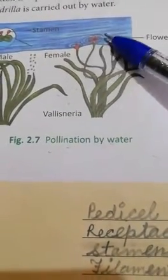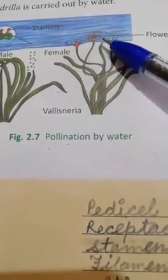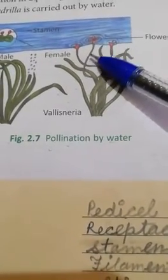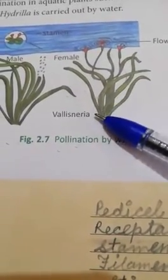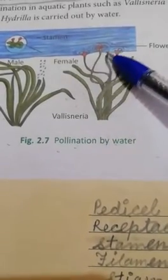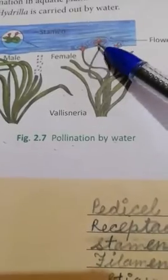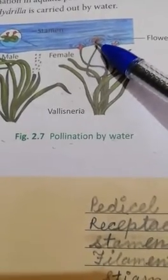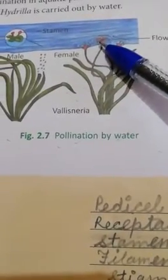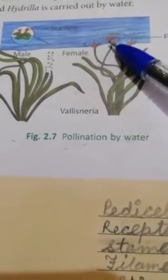Flowers are freely float on water. And they have a long stalk. Jis se ki woh kya hai, water mein freely float kar seke, yes. And the stigma of this flower is large and feathery to catch the pollens.